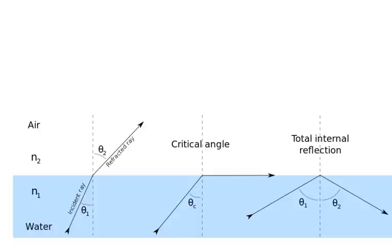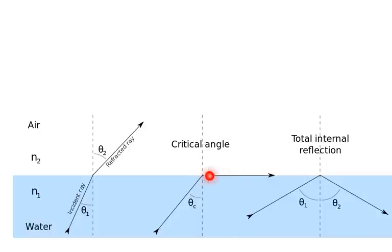Here you can see three different phenomena that happen when light goes from a material with higher optical density to one with lower optical density. In the first example, normal refraction is occurring — the angle of refraction is larger than the angle of incidence. In the second situation, at the critical angle, the light moves along the boundary and doesn't pass through into the material. If the angle becomes greater than the critical angle, we get total internal reflection, where the light instead of passing through the material gets bent internally.